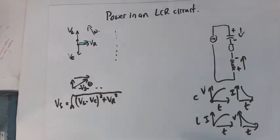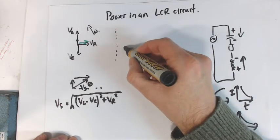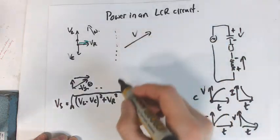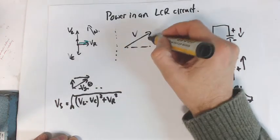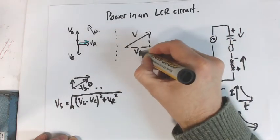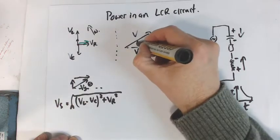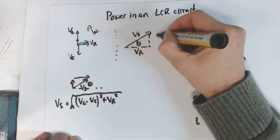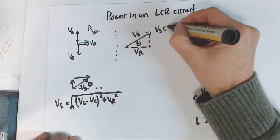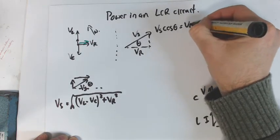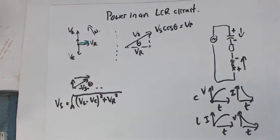Now when you're looking at power in a circuit, we're looking at power, so let me just draw this in a little bit more detail. We've got Vs like this, Vr, that's our phase angle. Vs times the cos of theta equals Vr. You can see that.